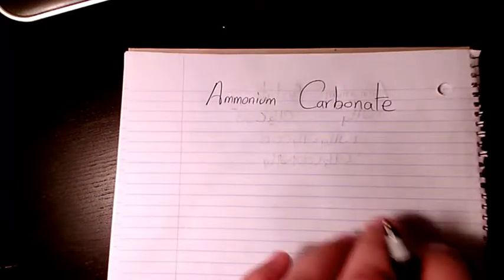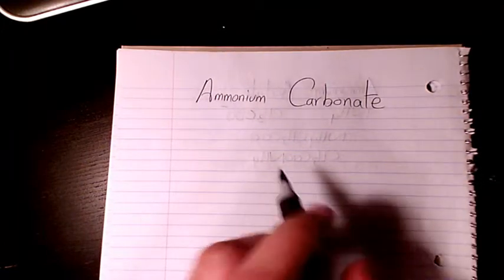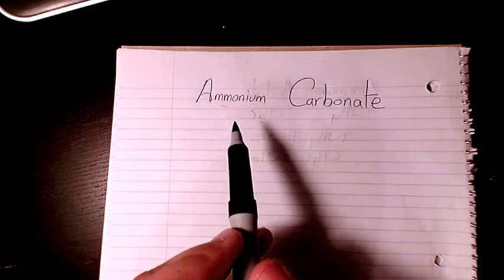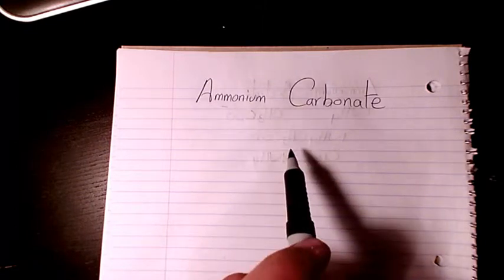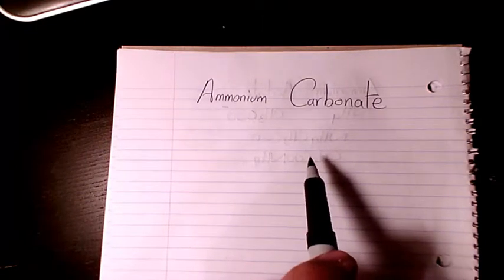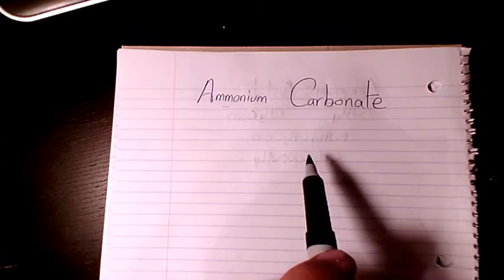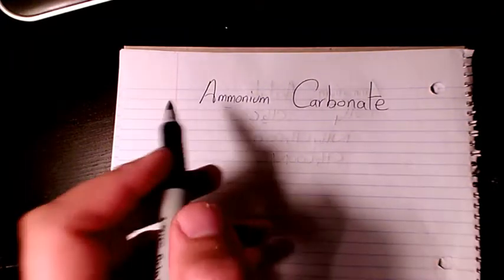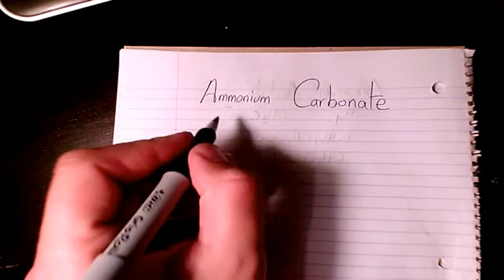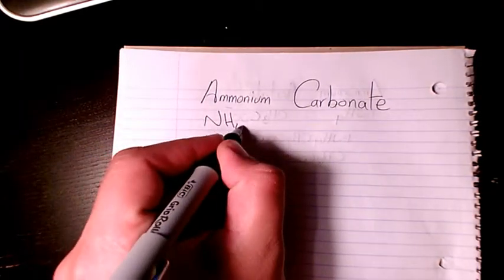What's up guys, this is Massey. Welcome to my channel. In this video I want to show you how to write the molecular formula of ammonium carbonate. Ammonium and carbonate are both polyatomic ions. Ammonium is NH4 plus.